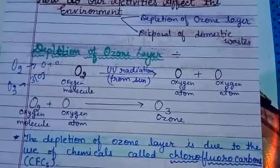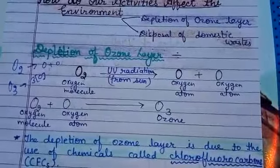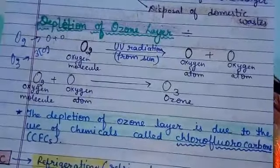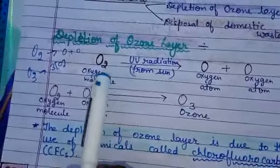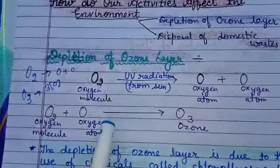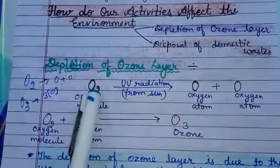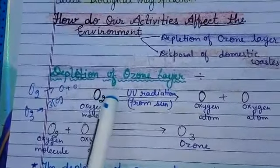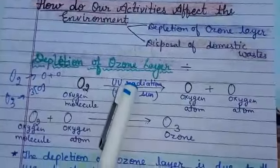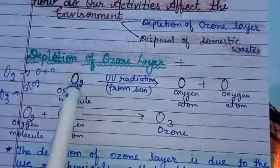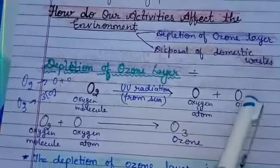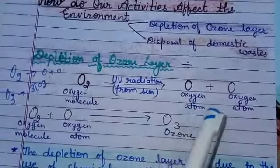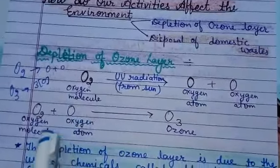Ozone is also a gas but it is poisonous in nature. Let us see how ozone is formed. Ozone is formed high up in the atmosphere by the action of ultraviolet radiation on oxygen gas. The high energy ultraviolet radiation from the sun splits the oxygen molecule into free oxygen atoms. These free oxygen atoms are very reactive, and one oxygen atom reacts with an oxygen molecule to form ozone.